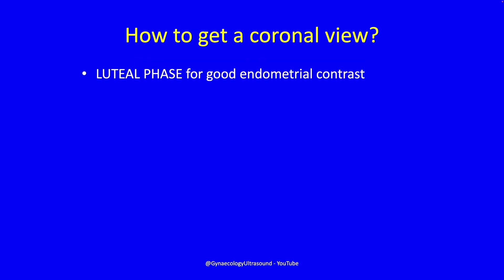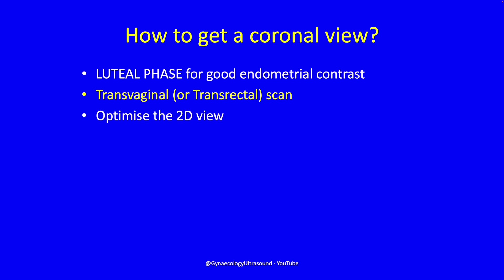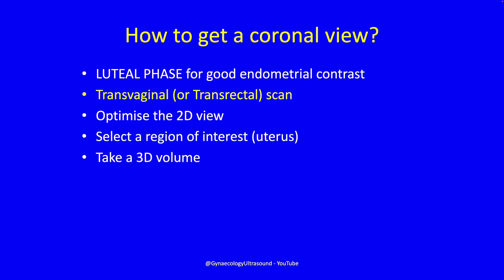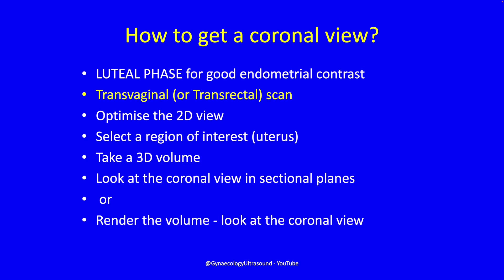So how do we get this coronal view? Ideally you'd have the patient in the luteal phase, because then you get really good endometrial contrast between the endometrium and the myometrium. You need to do the scan transvaginally or transrectally. Optimise your 2D view, because your 3D will only ever be as good as the 2D. Then select a region — in this case the uterus — take your volume, and then look at the coronal view in the sectional planes, or render the volume and look at the coronal view that way.